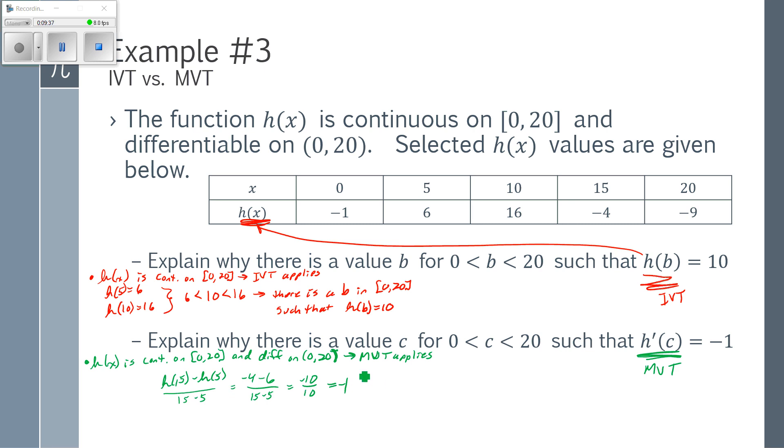So my average rate of change was negative 1 and the MVT says that well that means there has to be some C. So there is a C in 0 to 20 such that H prime of C is equal to negative 1 and I can even narrow this down even more and say well I actually even know it's between 5 and 15 which is a subset of 0 to 20 and that is the MVT.